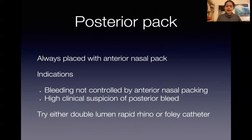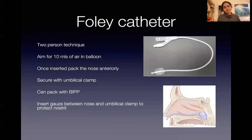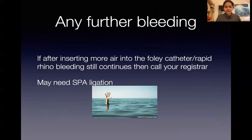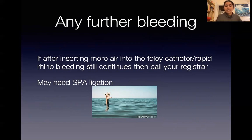Another option is a Foley catheter, which is just a standard urinary catheter. It's a two-person technique: insert the catheter up the nostril, inflate it with about 10 mls of air, and pull it forwards, then secure it with an umbilical clamp. Then pack the front of the nose as well to hold it in place — with BIP, nasopore, or even an anterior Rapid Rhino. If they continue to bleed, remember you can insert two to three more mls of air, as the tamponade effect may not be enough. Give that 10 minutes to see if bleeding continues — that usually helps resolve the issue.